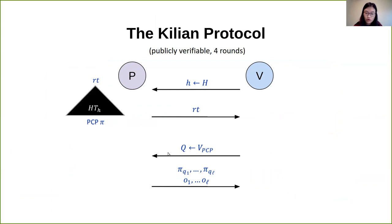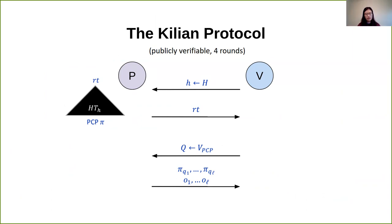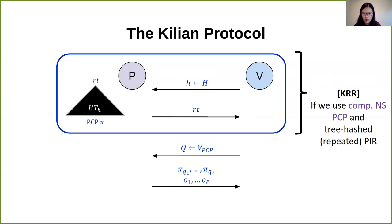Kilian's protocol works as follows. The prover computes a root, which is a commitment to a PCP pi, and sends it to the verifier. The verifier then sends a random PCP query and asks the prover to reply with answers to those locations along with openings to the commitment, showing they are the PCP answers the prover had committed to. To support local openings, we need a hash function or commitment scheme that allows opening a single location without opening everything, since PCP pi may be very long. This is known as a tree commitment scheme.